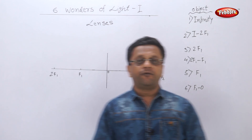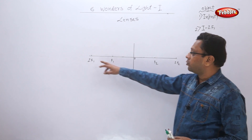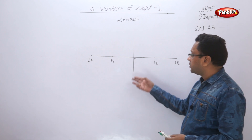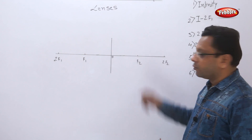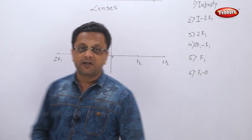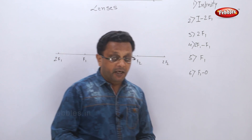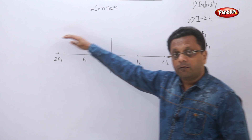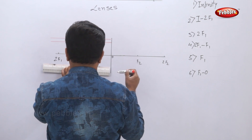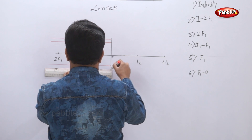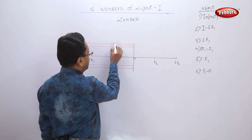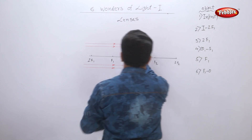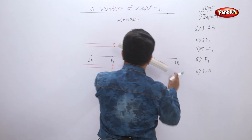First, the object is placed at infinity. In this case, all incident rays will be parallel to each other. Because this is a converging lens, all the refracted rays will converge at F2. I am drawing two rays on each side — these are the incident rays, and the refracted rays pass through F2.